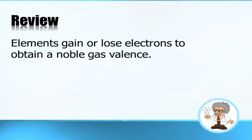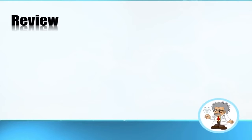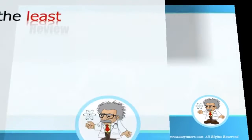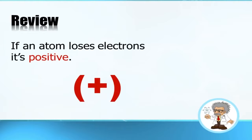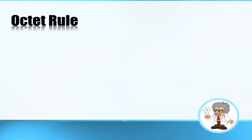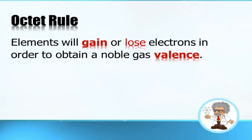Review: elements gain or lose electrons to obtain the noble gas valence — that is the octet rule. Nature moves toward the least resistance, the easiest path. If an atom loses electrons, it is positive; if it gains electrons, it is negative. From our demonstration, we understand the octet rule, also called octet configuration — achieved when atoms gain or lose electrons to form a noble configuration.